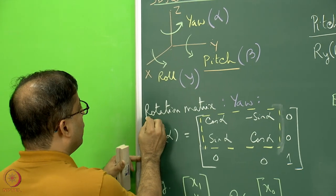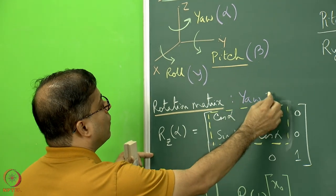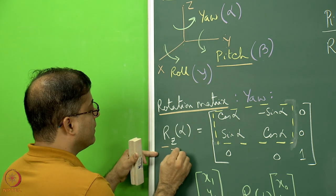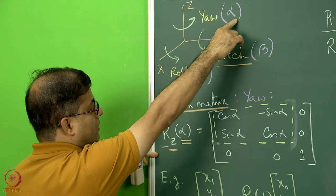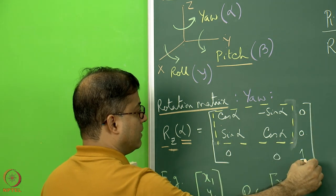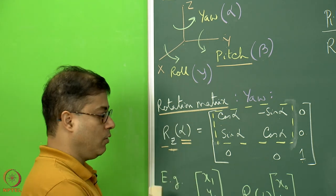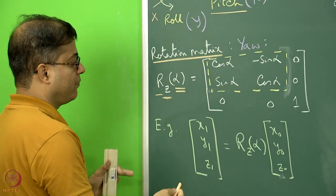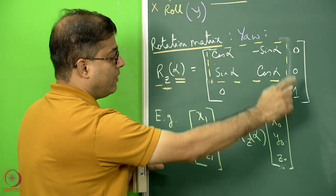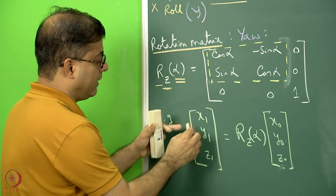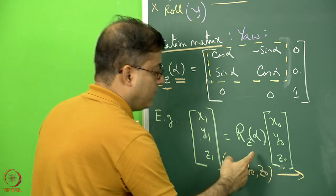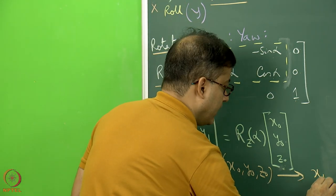For yaw only—anti-clockwise rotation about the z-axis by alpha—the rotation matrix Rz(alpha) is: [cos alpha, -sin alpha, 0 / sin alpha, cos alpha, 0 / 0, 0, 1]. Given old coordinate x0, y0, z0, placing it as a column vector and pre-multiplying by Rz(alpha) gives the new coordinate x1, y1, z1. This converts old coordinates to new coordinates after an alpha-angle rotation about the z-axis.